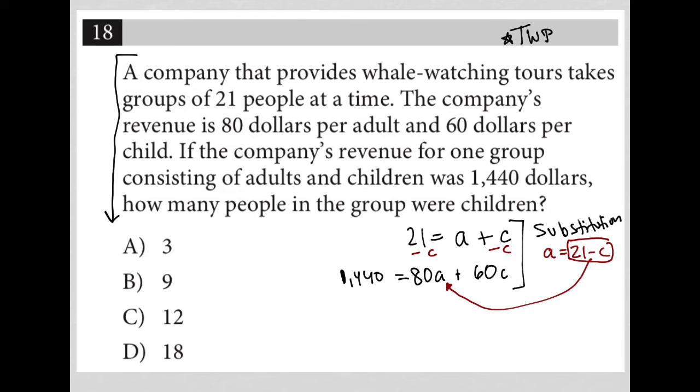So I'm going to have 1,440 equals 80 times (21 minus C). This allows me to have an equation that only has C for children. The question wants me to figure out how many children there were, so I like this strategy.